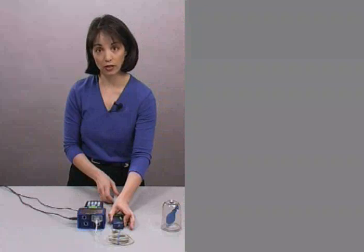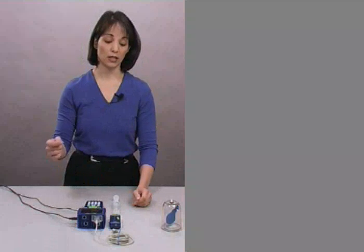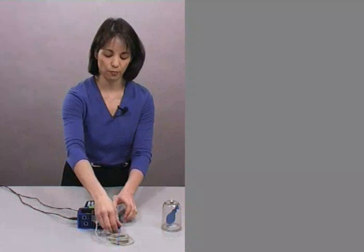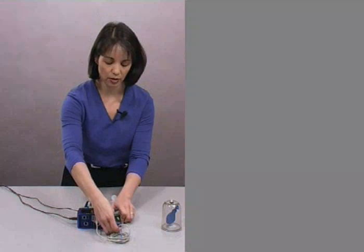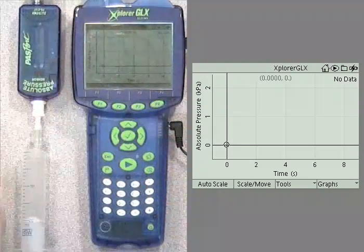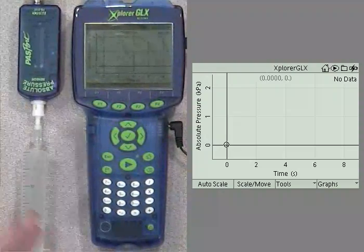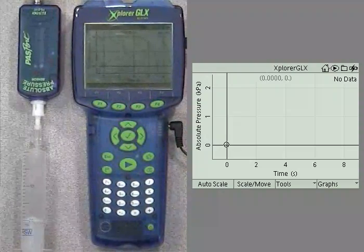And then you're ready to connect the sensor to the Explorer GLX in one of these top ports, but I am going to use this passport extension cable so that we can provide you with a better view of the procedure. So let's connect it. And when we do, we see that the Explorer GLX opens with a graph display of pressure versus time.